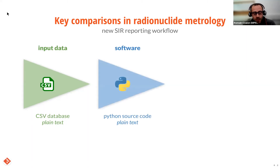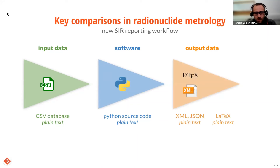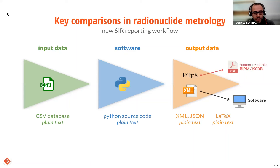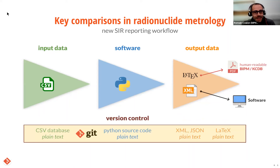We decided to collect all this scattered information in a database made up of CSV files. The CSV format was chosen because it's both convenient to fill with Excel and readable by software without formatting instability problems. We developed a Python program that reads the database to automatically produce two types of outputs. The first output file is a comparison report in LaTeX, which is the first version from which the final report will be elaborated, approved, and then published on the KCDB. The second output file is a formatting of the database into machine-readable formats — JSON and XML — to possibly provide direct data access for software in the near future.